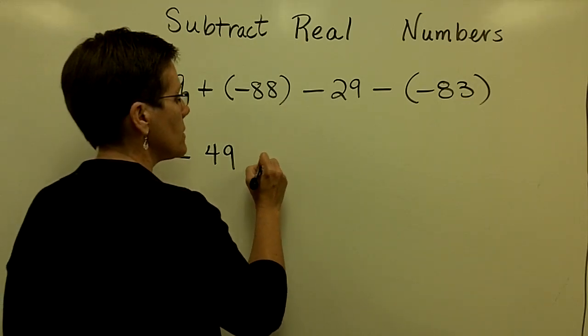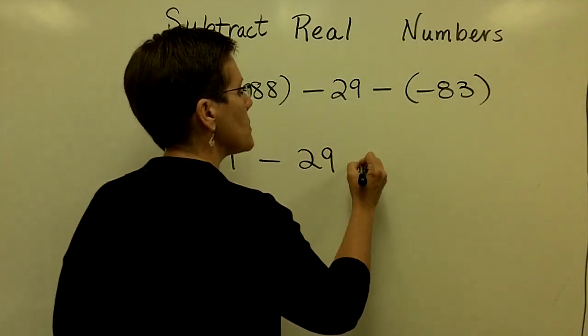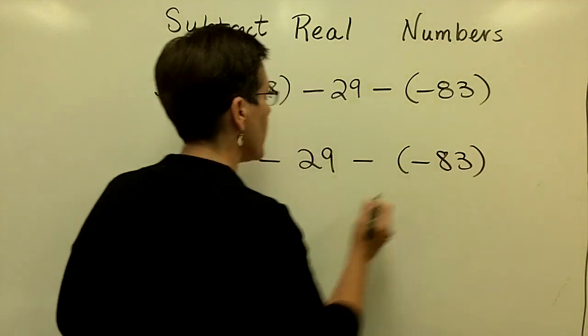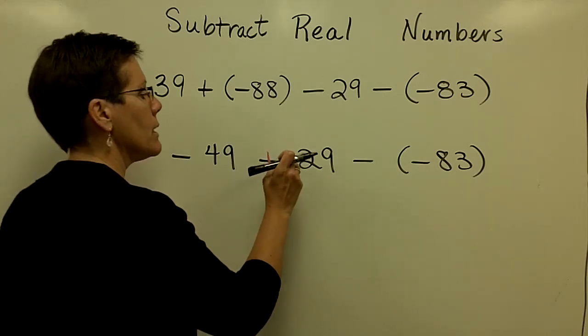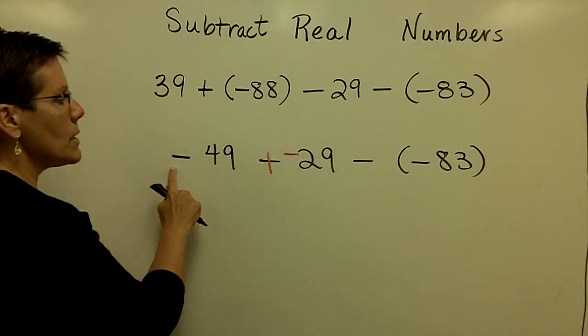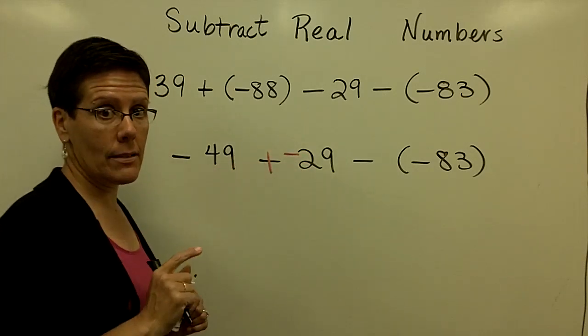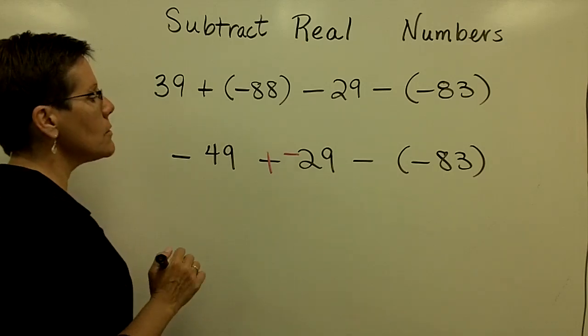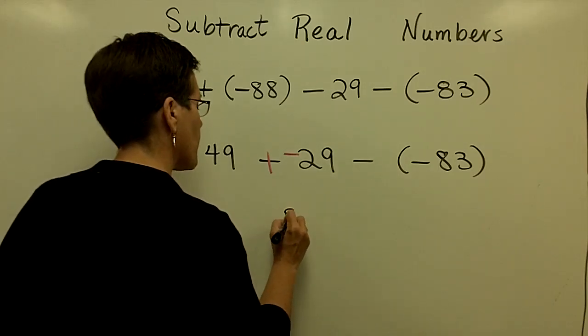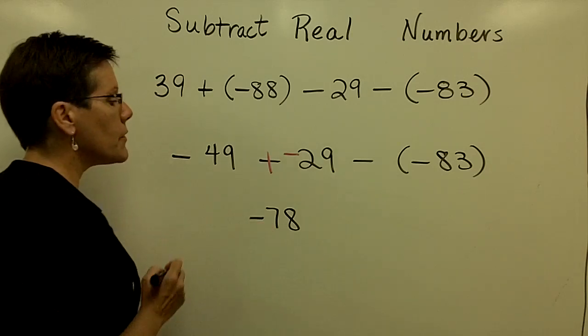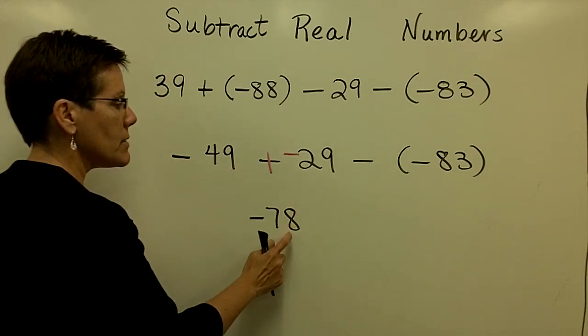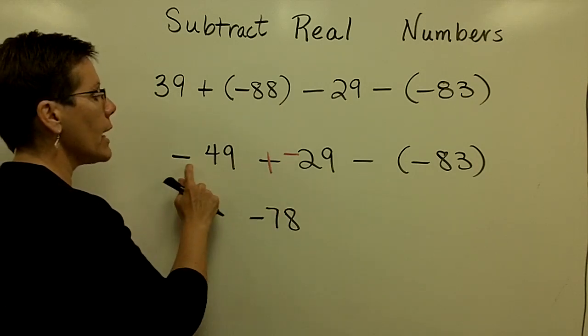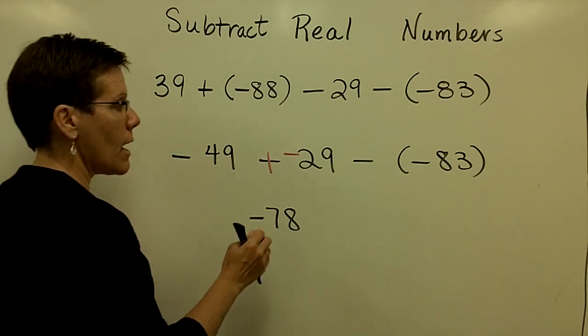Then let's subtract this 29 that comes next. And then finally we'll subtract that negative 83. And let's remember that when we subtract 29, we add the opposite. So these two now have like signs. So I should add their absolute values. And then give the common sign that they share. So 49 and 29 add to be 78. They're both negative signs. So I apply that common sign.